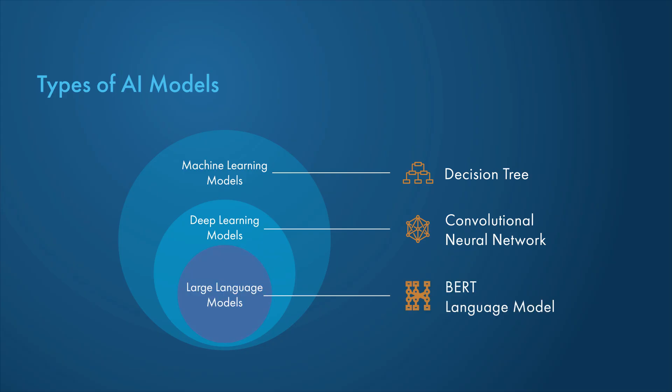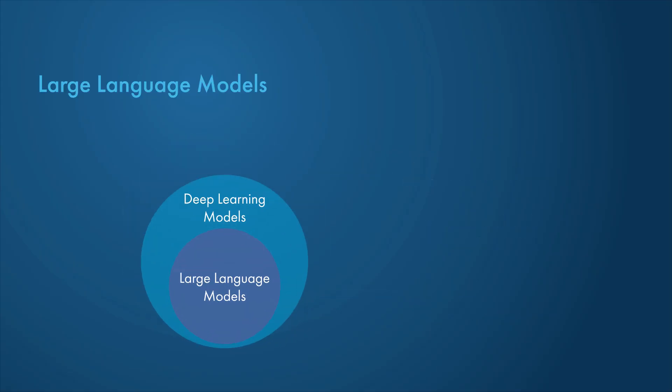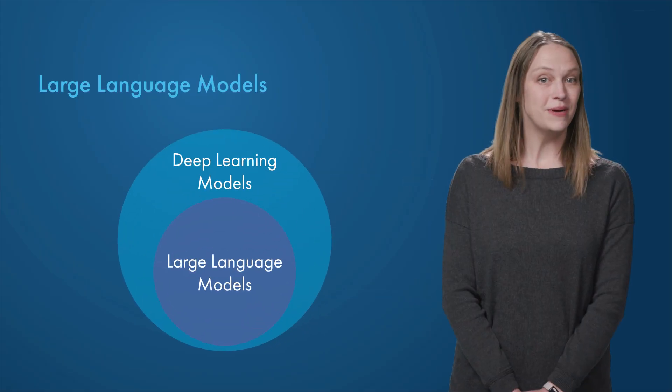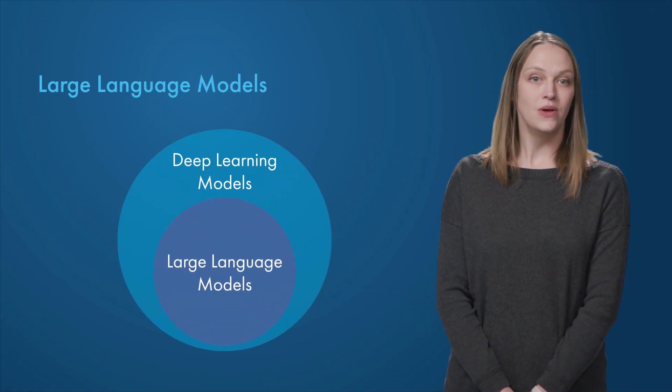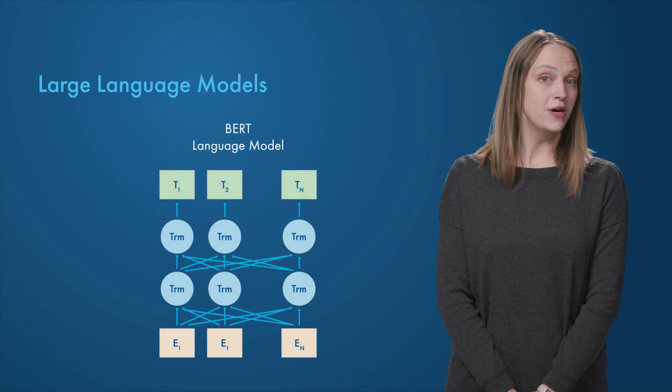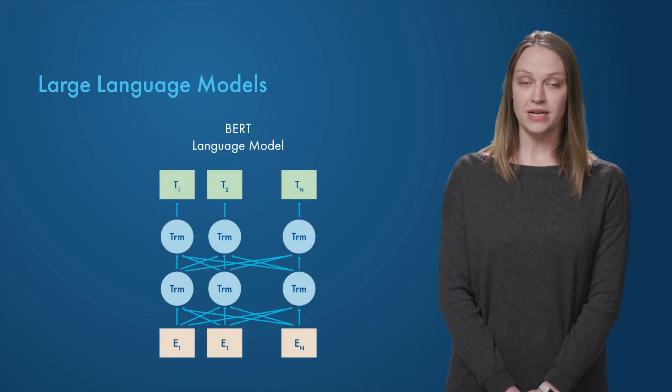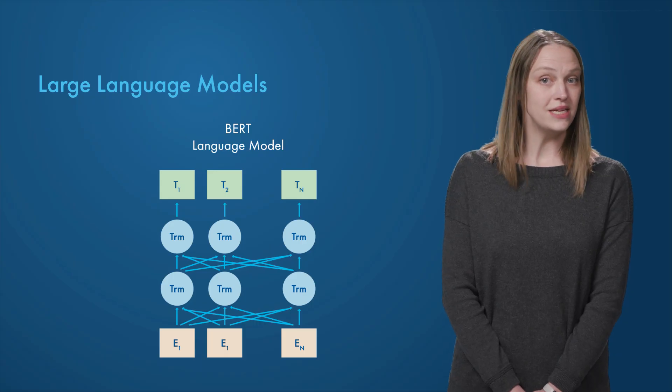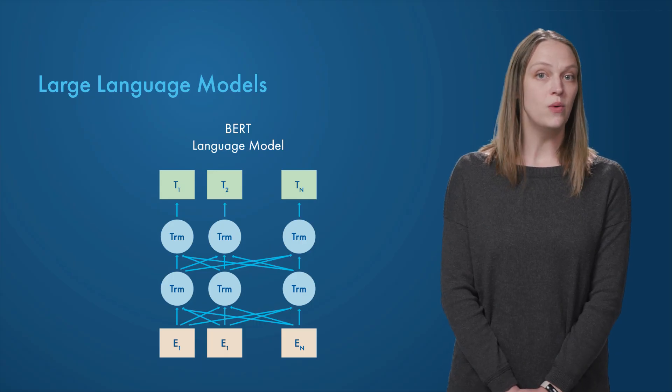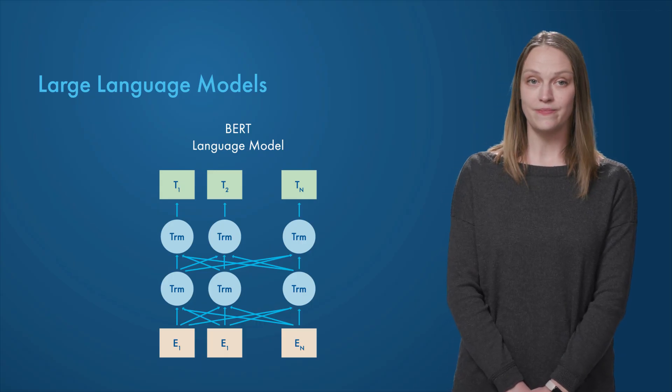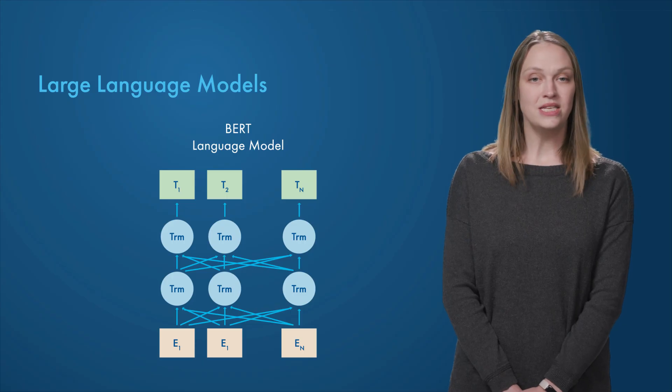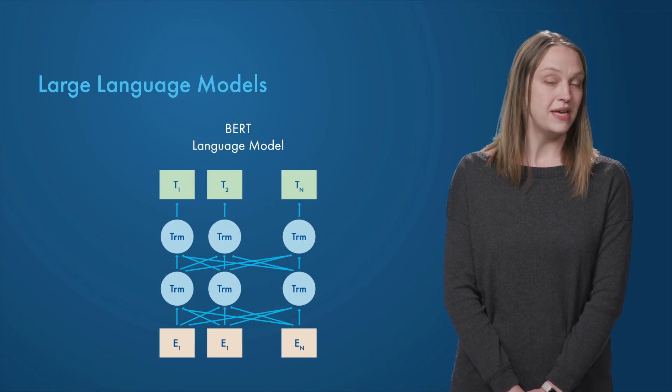Obviously, we have to talk about large language models. LLMs are a special case of deep learning models. Well-known LLMs include BERT and GPT. Because of their underlying transformer architecture, they can capture complex relationships between words and nuances present in human language, so they are more likely to correctly classify emotions based on context.